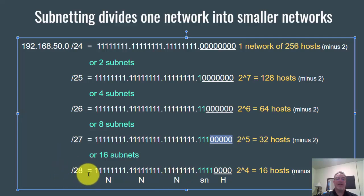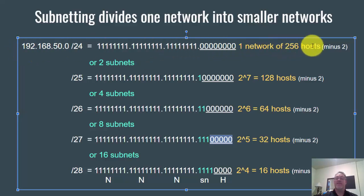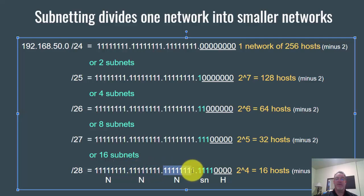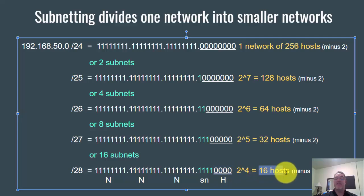If I want a /28 subnet mask and divide this one network of 256 into smaller networks, I can divide it into 16 subnets. Now I have four zeros in the host portion. These are the network portion bits, these are the subnet bits, and these are my host bits. Two to the fourth power equals 16 hosts per subnet.